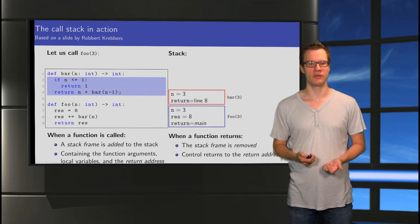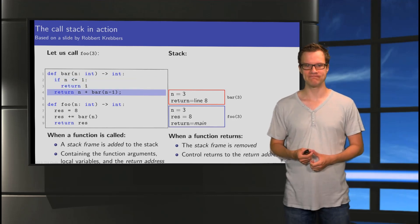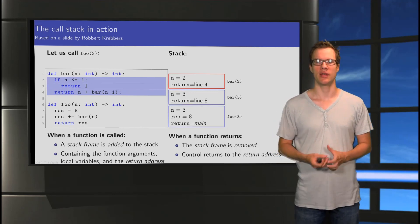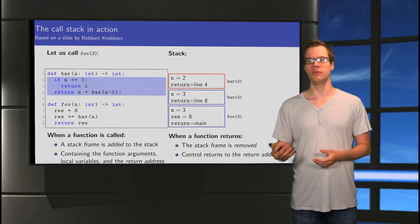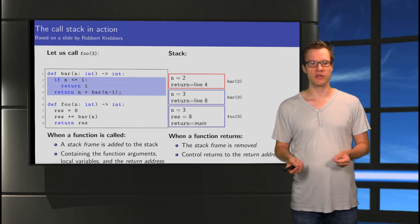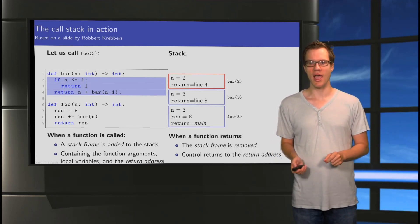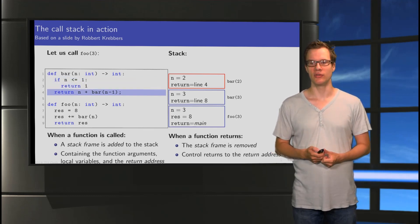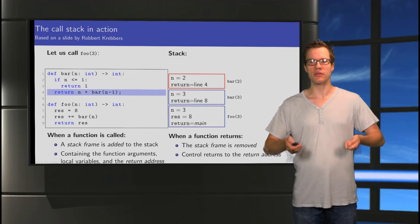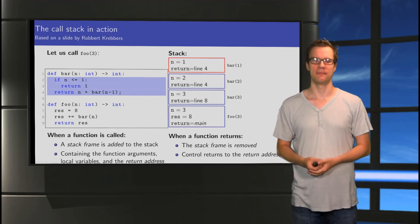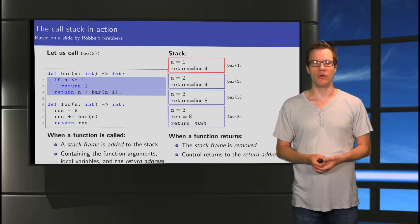And when we call the function bar, what happens? Well, we create a stack frame for our call to bar with the parameter 3. We need to store the parameter n. And we need to know that once we're done, we need to go back to line 8. Because that's where we were just before. Okay, so let's take a look. While n is not smaller than 1, so we get to line 4. And now we make a call to bar again. So, we create another stack frame. This time with n equals 2. We know that once we're done, we need to go back to line number 4. We take a look. What happens? Well, n is still larger than 1. So, once again, we go to line 4. And once again, we make a recursive call. So, we add another stack onto our stack frame. And there we go. n equals 1.